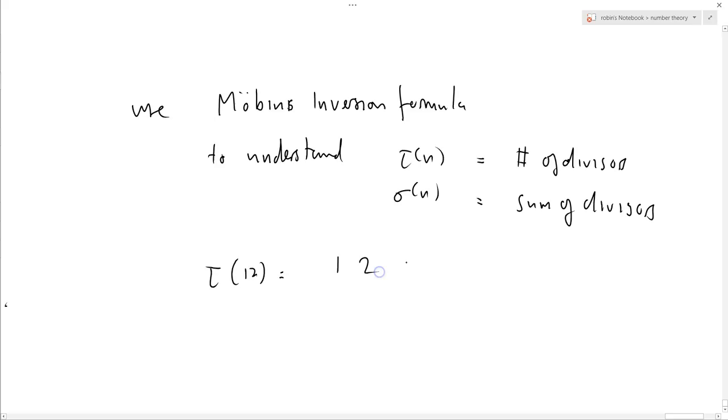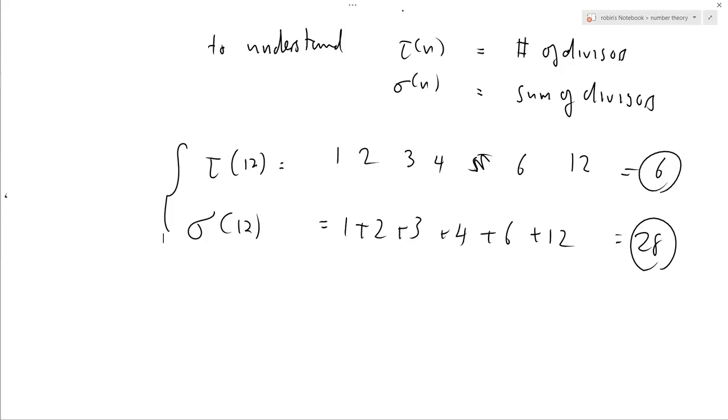So let's just remind ourselves what that is. τ(12)—well what are the divisors? It's 1, 2, 3, 4, 6, and 12, equals 6. And σ(12) equals 1 plus 2 plus 3 plus 4, which is 10 plus 6 is 16, plus 12 equals 28. So there's our τ and σ functions.